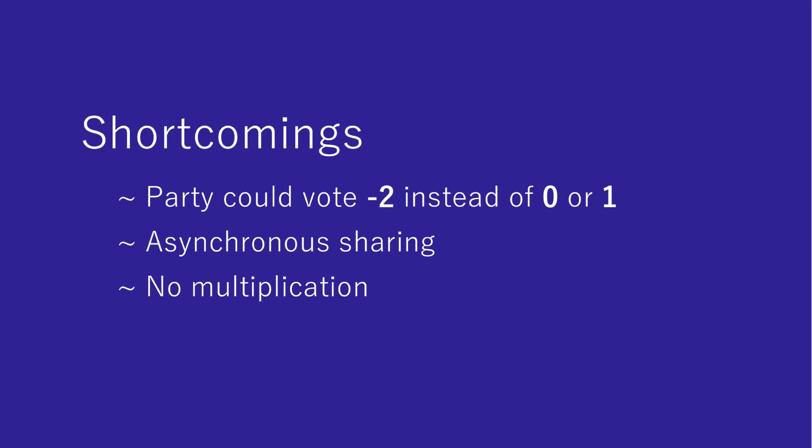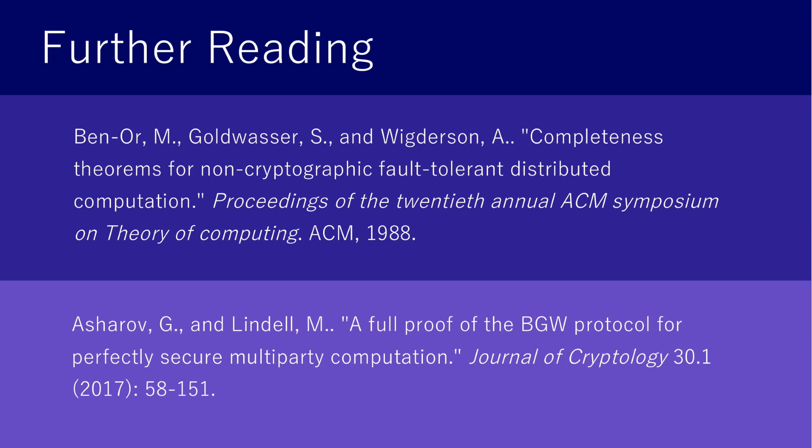A third shortcoming is that we only looked into a computation doing simple addition. Doing something more fancy like multiplication becomes more involved since the resulting polynomials would increase in degree. If you are interested in the topic, a good place to start is the original paper introducing the algorithm, also known as the BGW protocol after the last names of the authors. It also introduces a way to deal with multiplication.